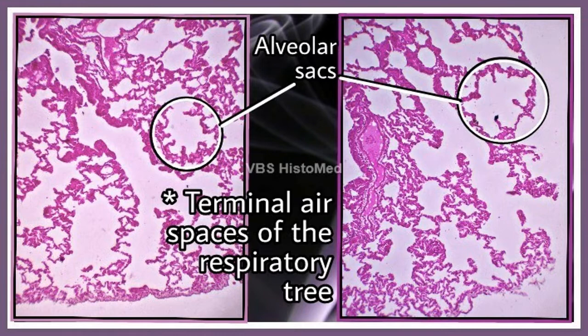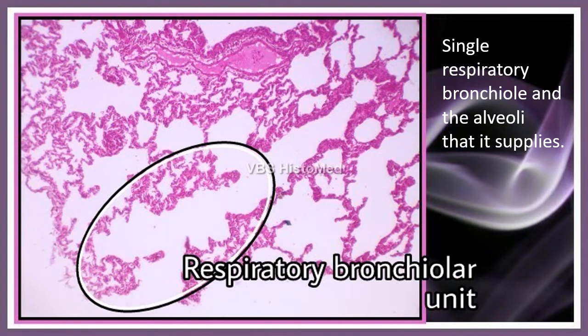Here we introduce another important terminology: a respiratory bronchiolar unit is a single respiratory bronchiole and all the alveoli that it supplies. This is called the respiratory bronchiolar unit.